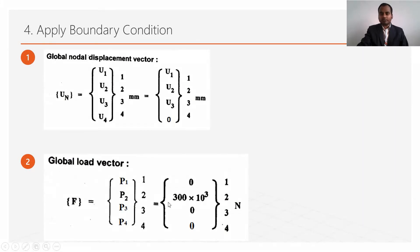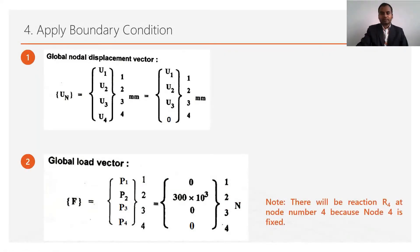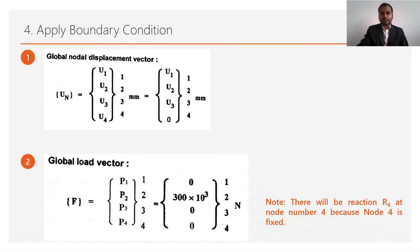At node 2, a force of 300 × 10³ N is applied, so P₂ = 300 × 10³. At node 3, no force is applied, so P₃ = 0. At node 4, no external force is applied, but since the body is fixed there, a reaction R₄ will form. This complete equation will be used to find the reaction in the last step.